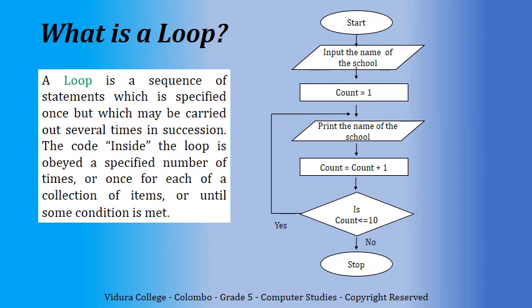Here, by changing the value in the diamond, you can control the number of times you print the name of the school. If you want to print the name of the school thousand times, simply replace the number 10 with 1000.